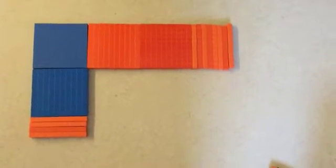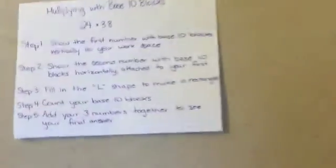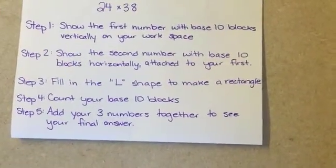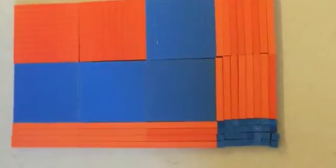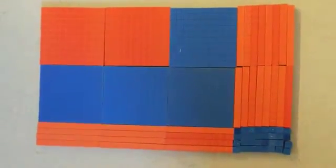You can see now that I have created an L shape. I need to fill in the L shape for step 3 to make it a rectangle. You can see that now I have my original L shape, but I filled in to make it a complete rectangle.